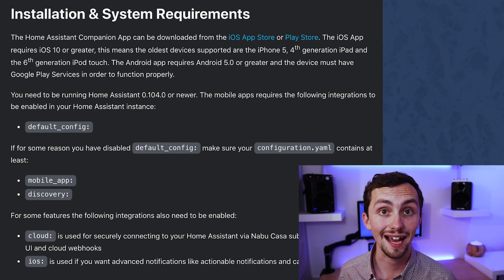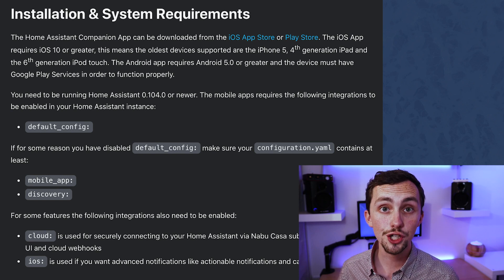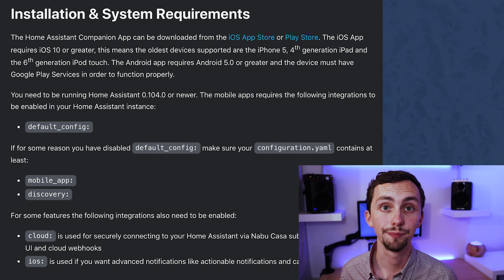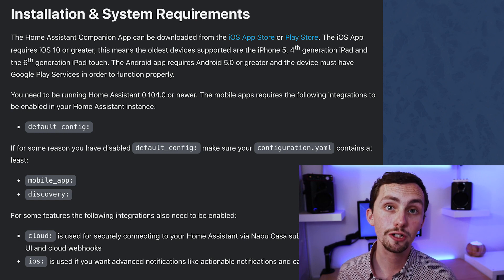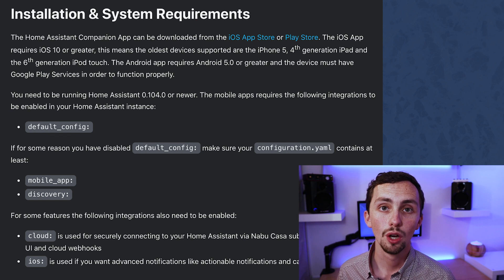To get this to work you're going to need the iOS companion app on your device. You're also going to need to be running Home Assistant version 0.104 or later, and we're going to need to add a few things to our Home Assistant config file. These are all listed in the companion app website. First of all you need default config. If you don't have that for whatever reason then you need mobile app and discovery. If you want to be using actionable notifications then you should also add iOS. Once you've done that, save your config and restart Home Assistant.